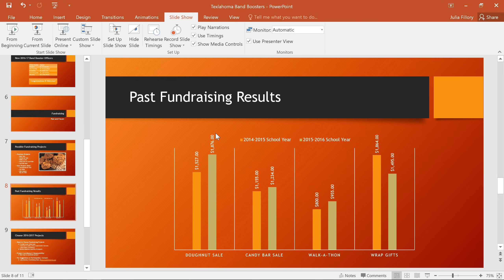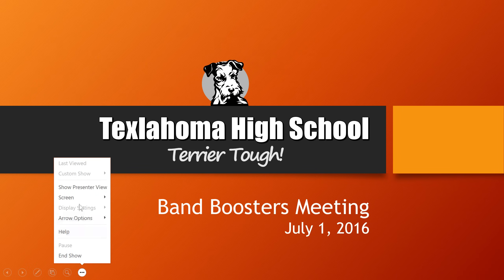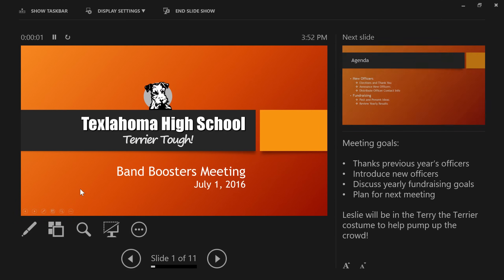What if you're going to be using a second display to give your presentation, like a projector or a separate monitor? There's actually a really cool feature called Presenter View that can give you extra help behind the scenes. Here's how it works. First, start your presentation as usual, then go to the slide options menu. Next, choose Show Presenter View, and you'll be taken to a special set of tools that only you can see.